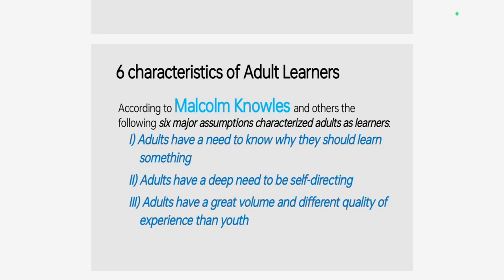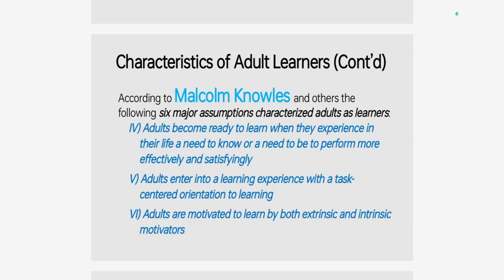The first one is adults have a need to know why they should learn something. These six characteristics are very important in order to plan learning for adults. The second one is adults have a deep need to be self-directing. The third one is adults have a great volume and different quality of experience than youth. The fourth characteristic is adults become ready to learn when they experience a need to know or need to perform more effectively and satisfyingly.